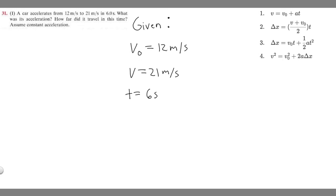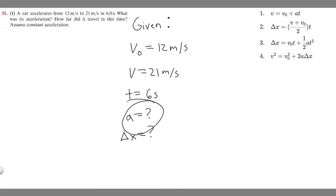We're trying to find acceleration a and how far it traveled, which we represent as Δx. Let's start with a using the kinematic equations. We're given v₀, v, and t, so we look for the equation containing all three. The first kinematic equation has v, v₀, and t, so we can solve it for a.